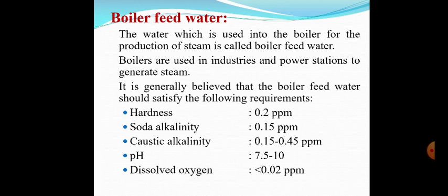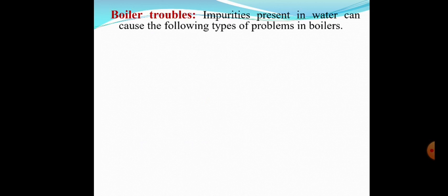Therefore, it is generally believed that boiler feed water should satisfy the following requirements: hardness should be around 0.2 ppm, soda alkalinity should be in the range of 0.15 ppm, caustic alkalinity is in the range of 0.15 to 0.45 ppm, pH is 7.5 to 10 which is a basic pH, and dissolved oxygen should be less than 0.02 ppm.